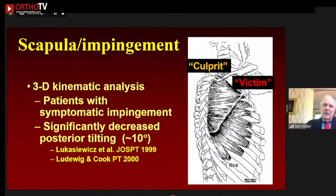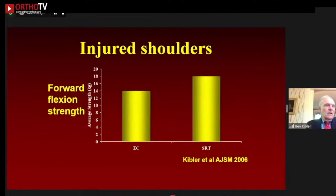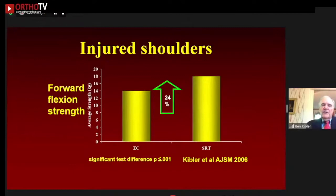In impingement, many studies show that patients with symptomatic impingement have decreased ability to posterior tilt. The victim is the anterior shoulder; the culprit is the anterior tilt and loss of retraction. Many studies show that protraction decreases the subacromial space, and that activating the serratus anterior or lower trapezius increases the subacromial space, eliminating the impingement. We know that placing the arm in the scapular retracted position can improve forward flexion strength by 24%, demonstrating that stabilization in retraction facilitates and increases rotator cuff and forward flexion strength.